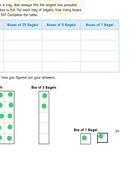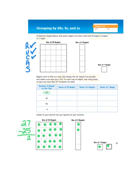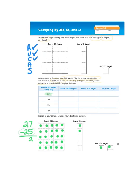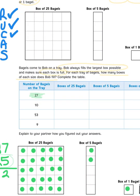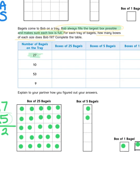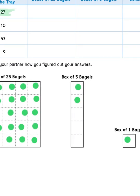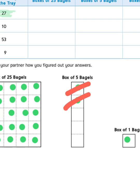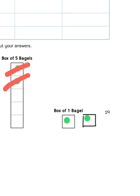Now, if I look at the instructions up at the top, it shows us that Bob always fills the largest box possible and makes sure that each box is full. So a box of 5 bagels with only 2 bagels in it, it's going to seem like you got ripped off. So it doesn't work. Okay?